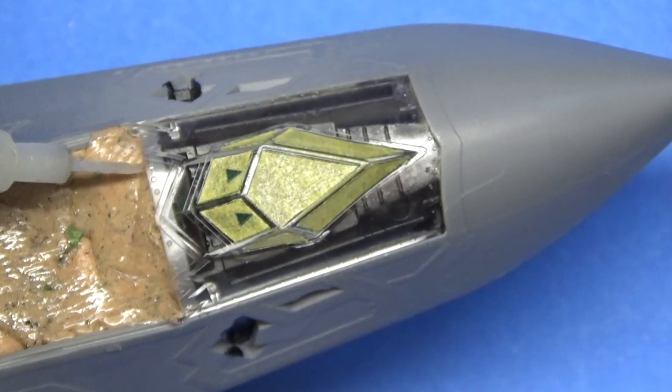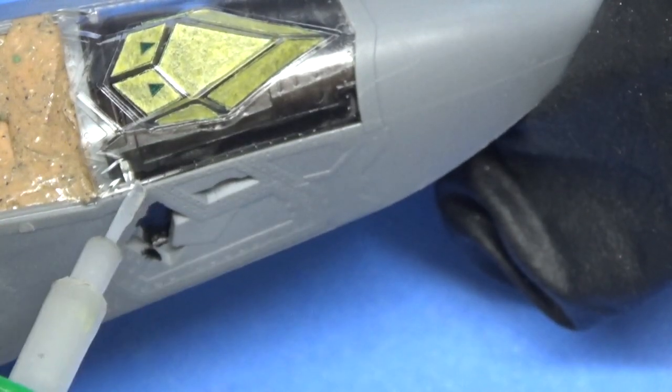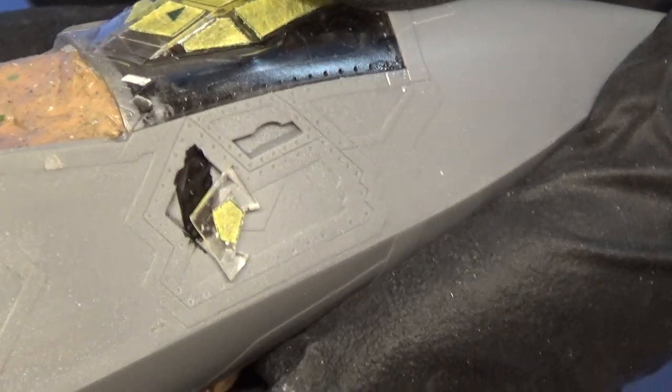This right here is the underside of the nose. You could see the wheel well off to the side. Just make sure you get all the glue in there. Just like you see here, we now have clear parts on each side of the nose. One here, one on the opposite side, more sensors.